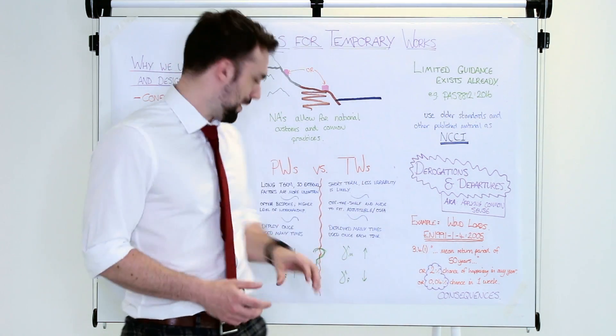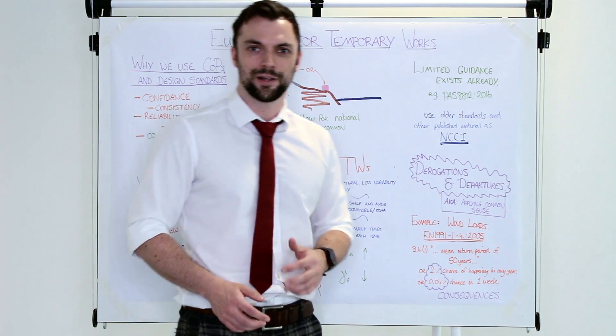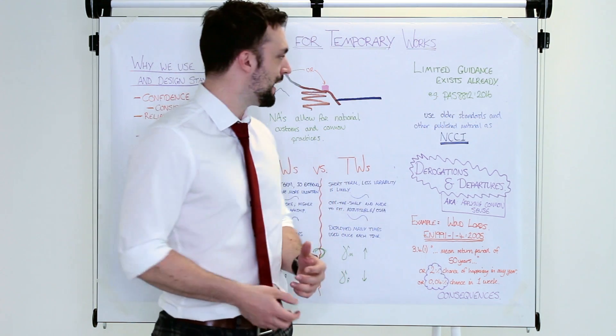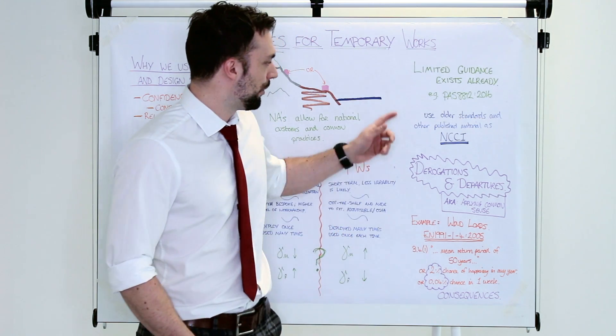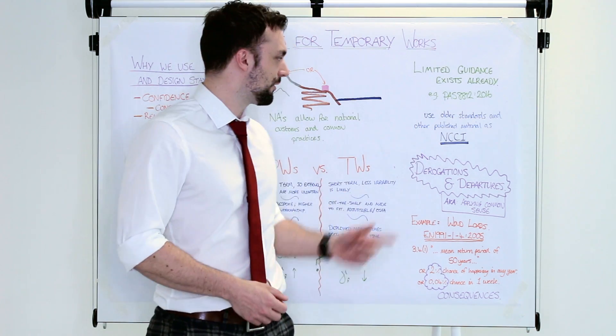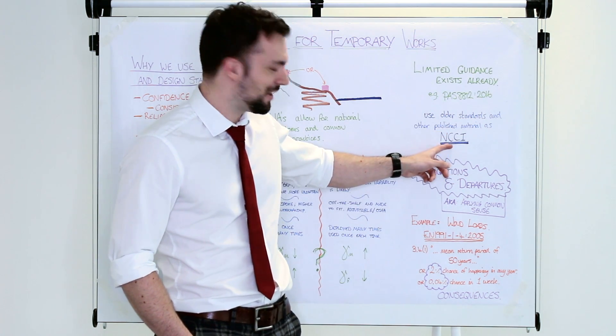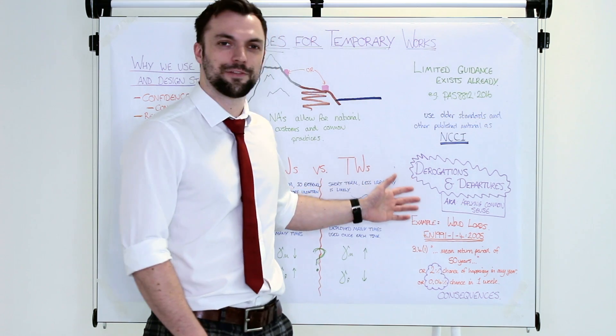Guidance already exists for how you do this. There is the PAS 8812, which is just coming in now. It's a British standard sort of in its nascent form. But they're older standards that already do a pretty good job and the Eurocodes let you use these as what's called NCCI, non-contradictory, complementary information.